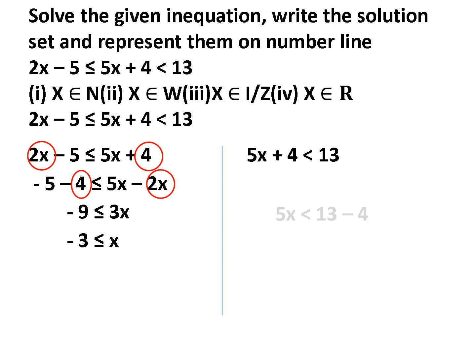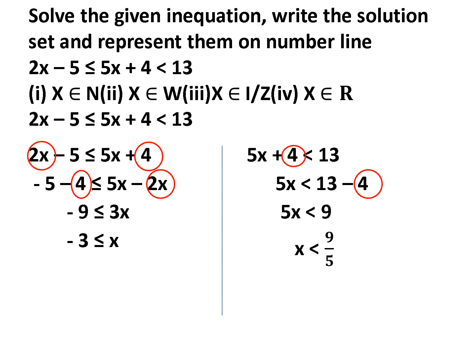Now let us solve the second part: 5x plus 4 less than 13. We shift plus 4 from the left-hand side to the right-hand side. On further simplification, we get 5x is less than 9, hence x is less than 9 by 5. In mixed fraction form, x is less than 1 and 4 upon 5. Combining both parts: minus 3 is less than or equal to x, which is less than 1 and 4 upon 5.